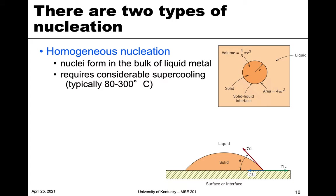It's important to note that the nucleation phenomenon we discussed — a sphere of solid forming in a liquid — is known as homogeneous nucleation, because it forms from the bulk of the liquid metal or material. This type of nucleation typically requires a lot of supercooling — as much as 80 or even 300 degrees below the equilibrium temperature — which is a lot.